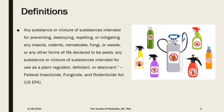Starting with the definition of pesticide according to the Environmental Protection Agency in the United States: any substance or a mixture of substances intended for preventing, destroying, repelling, or mitigating any insect, rodents, nematodes, fungi, or weeds, or any other forms of life declared to be pests — any such substance or mixture is called a pesticide.